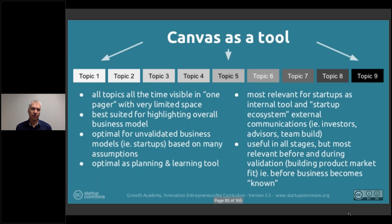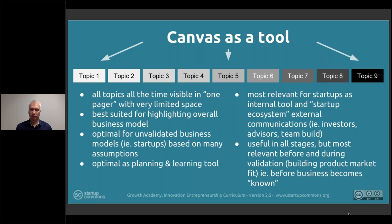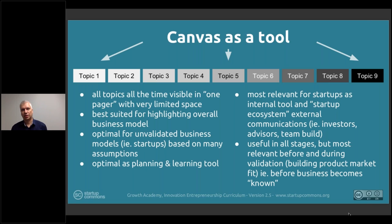Compared to a traditional business plan, which has deep, long, descriptive content on topics one on top of the other — making it very difficult to iterate — the business model canvas, or canvases in general, allows you to visualize everything. You only record bullet point level information.